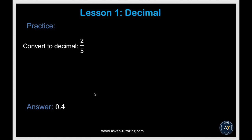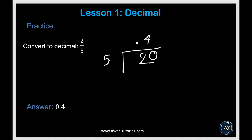Now let's learn how to convert from fraction to decimal. To convert a fraction to decimal, you divide. The top number always goes inside the division box. If 5 doesn't go into 2, put a decimal on top, then bring a zero down. How many times does 5 go into 20? Four times — 4 times 5 is 20, no remainder. If there is a remainder, keep adding zeros and dividing until there's no remainder.